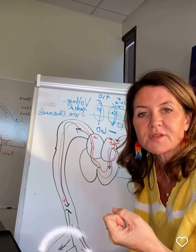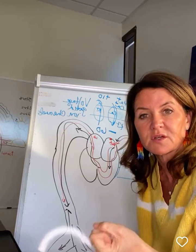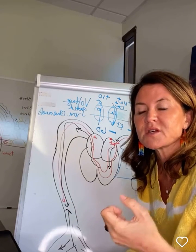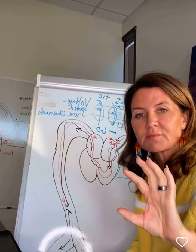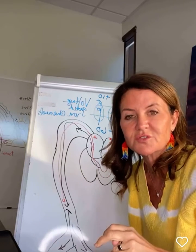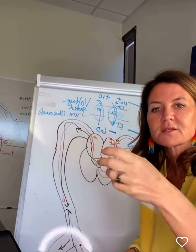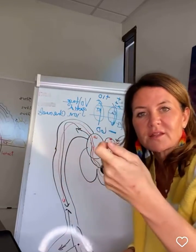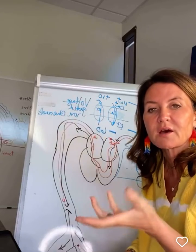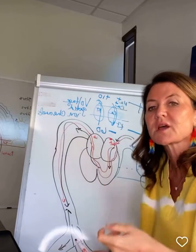Most people think the heart works like a piston, just doing this type of thing. But it really — the mechanism by which, when I'm hiking on the mountain and I tell you guys it torques or twerks — it's actually more of a twisting mechanism, more like this, to literally throw the blood out. So it's not so much like a piston as it is like a twisting mechanism.